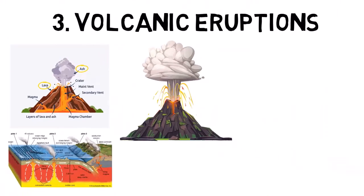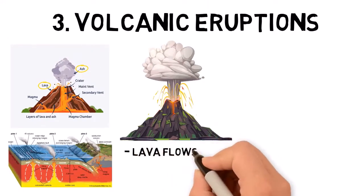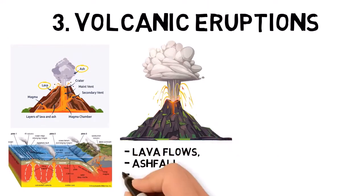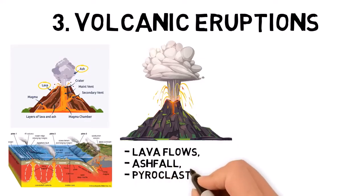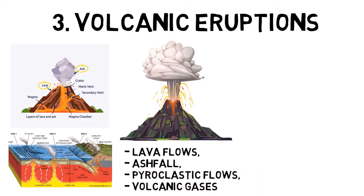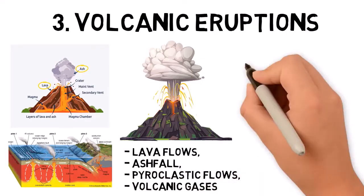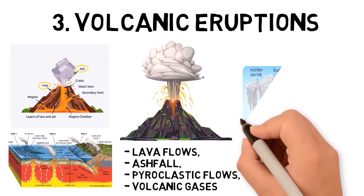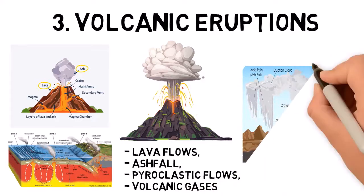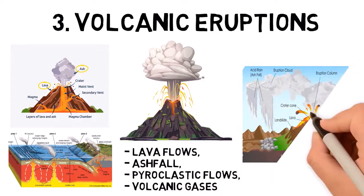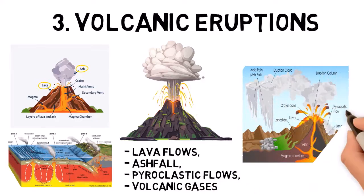Volcanic eruptions can cause a range of hazards, including lava flows, ashfall, pyroclastic flows, and volcanic gases. These hazards can destroy everything in their path, contaminate water supplies, disrupt air travel, and cause long-term environmental damage.